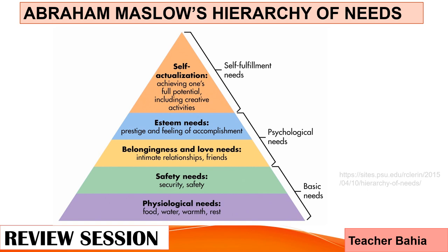For review, this is Abraham Maslow's hierarchical needs. As you can see, there are five needs mentioned. First, number one is physiological — this includes food, water, and shelter. Second is safety, which means security of the body, employment, safety whenever you're out of your house or with your friends, and security of your property. Next is love and belonging, which is also called social needs.